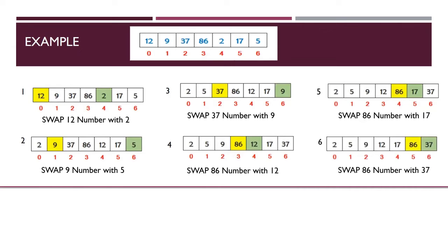Now find the sixth smallest number stored in the array between index 5 and 6. The sixth smallest number is 37. Check if the number at index 5 is greater than the sixth smallest number at index 6. If so, swap the numbers — here 86 swaps with 37.